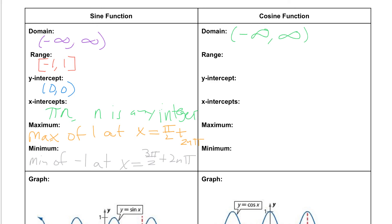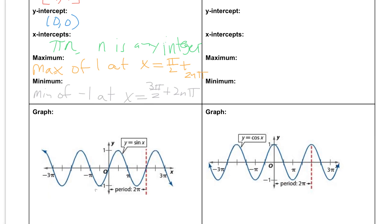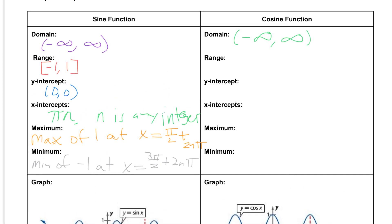If we take a look at the range, again very similar to the sine function, our graph is going between negative 1 and positive 1 as it goes from left to right. So our range is negative 1 to positive 1, written in brackets since it includes both endpoints.